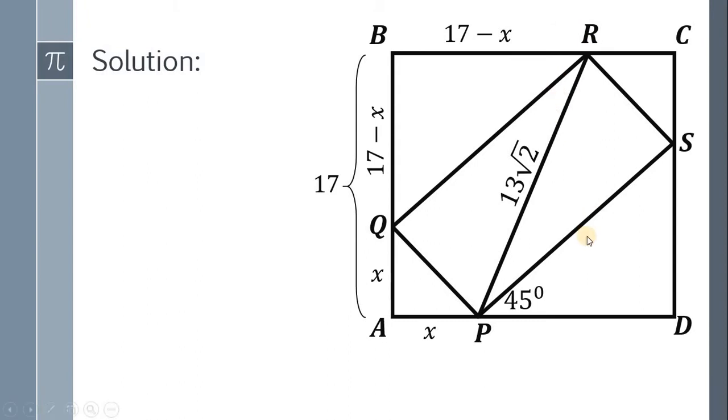Now using the concept of isosceles right triangle, if the side length is equal to X, the hypotenuse is equal to X multiplied by √2. It follows that this hypotenuse must be (17 minus X) multiplied by √2.